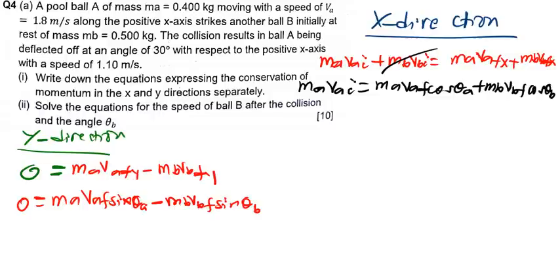So for the first question, we are done. The next question says: solve the equations for the speed of ball B after the collision and the angle theta_B. The data we have been given includes the mass of A, the initial velocity of A, the mass of B, the angle theta_A, and the final velocity of A. We want to find theta_B and VB_final.